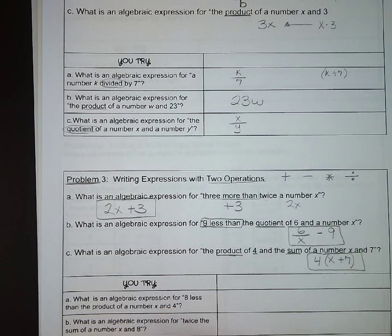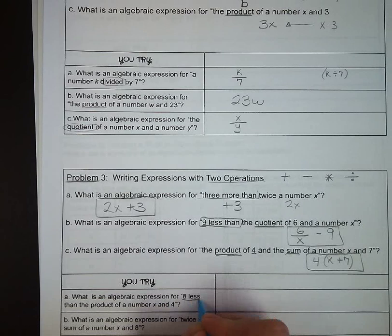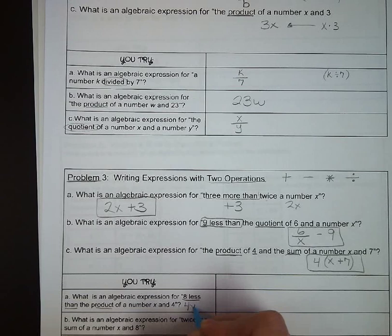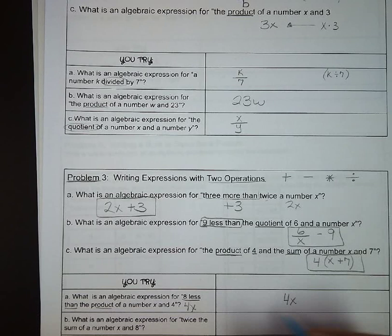What is an algebraic expression for eight less than the product of a number x and four? So we've got the product of x and four, so that's four x, and we are having eight less than that, so we are subtracting eight. Four x minus eight.